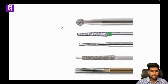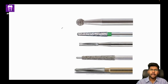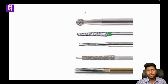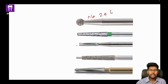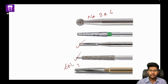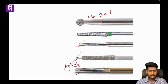Now that you know the laws of pulp chamber anatomy and how to search for canals, you need to know the instruments required for endo access cavity preparation. You generally use number 2, 4, and 6 round burrs; a tapered burr; carbide burrs; a safe-end tapered burr; and then the endo-access burr or Endo-Z burr. I will speak about this burr in detail in the upcoming slides.